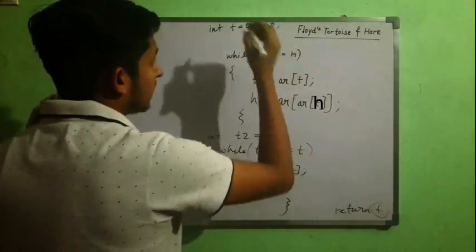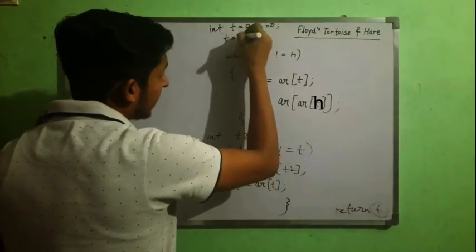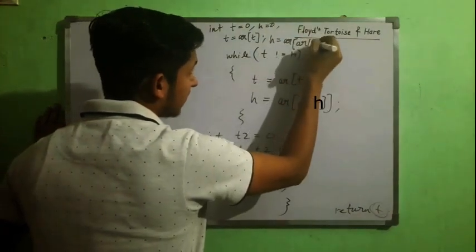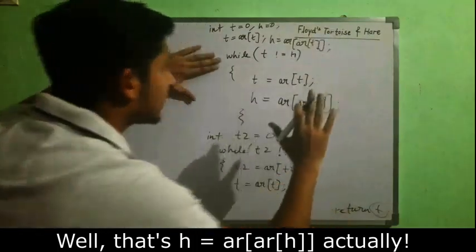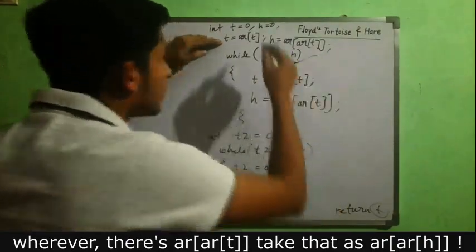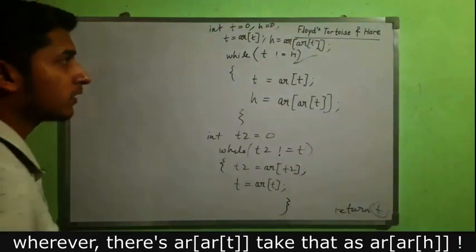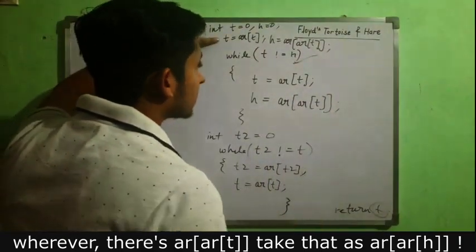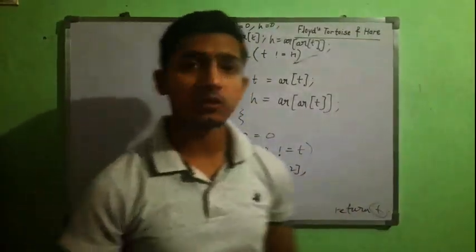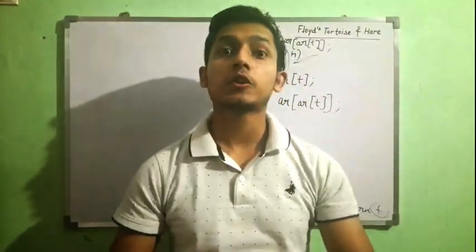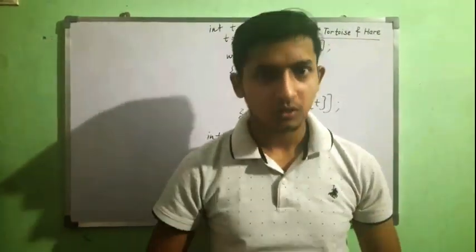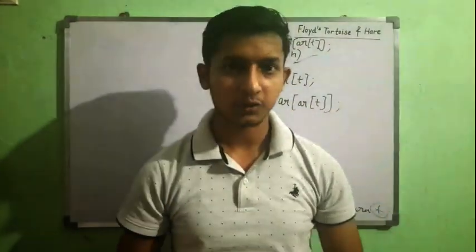Initialize t = array[t] and h = array[array[h]] once before starting the loop, because if you don't, both are initially equal and the loop won't work. You can also use a do-while loop. So that's it — if you found this concept effective and useful, hit the like button, comment down below, and subscribe to the channel for more such videos. See you next time, goodbye!